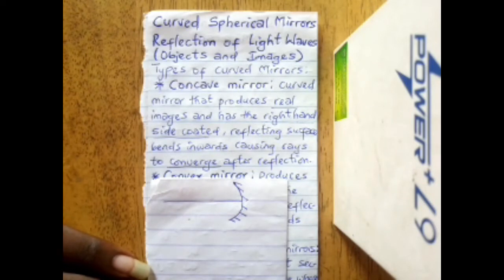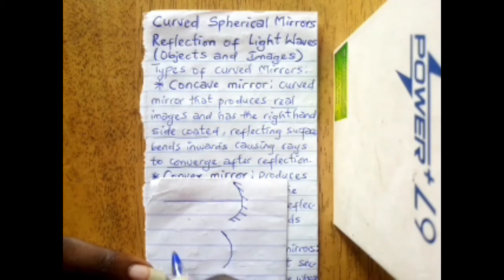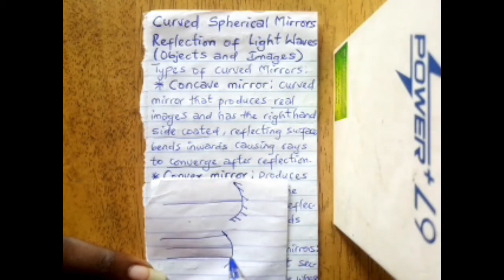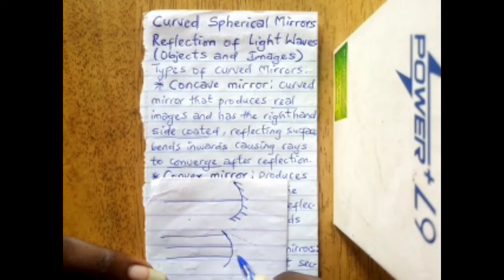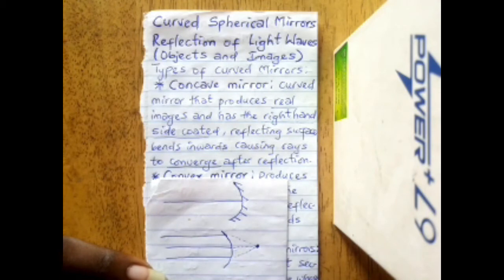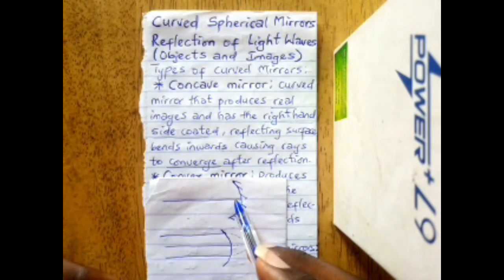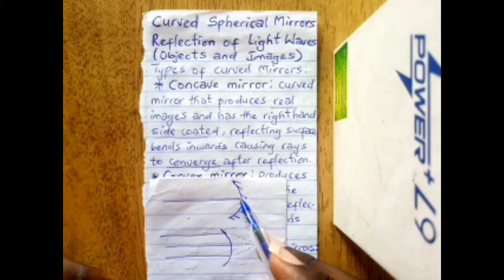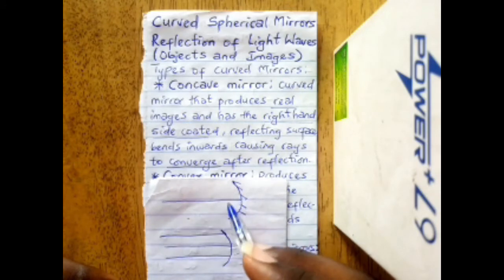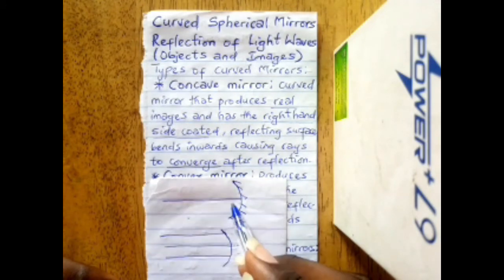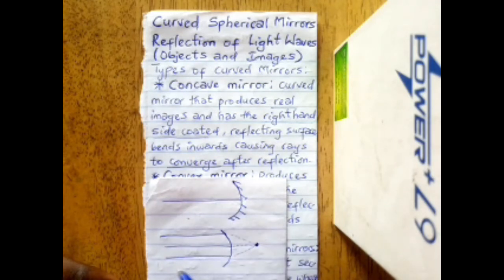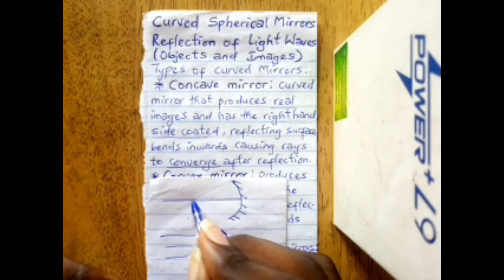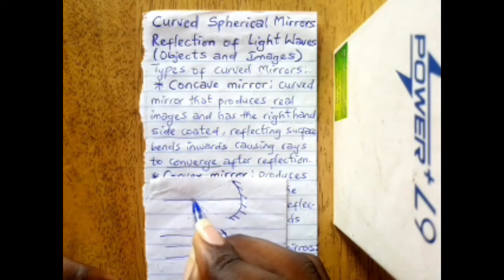For a concave mirror, rays of light incident on it tend to converge at a point. Concave mirrors converge light rays after they have been reflected on the mirror, so incident rays converge at a particular point.